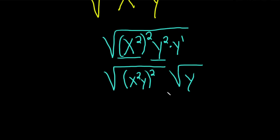And now, whenever you have the square root of something squared, it goes away. Again, everything here is positive. So this is x squared y square root y.